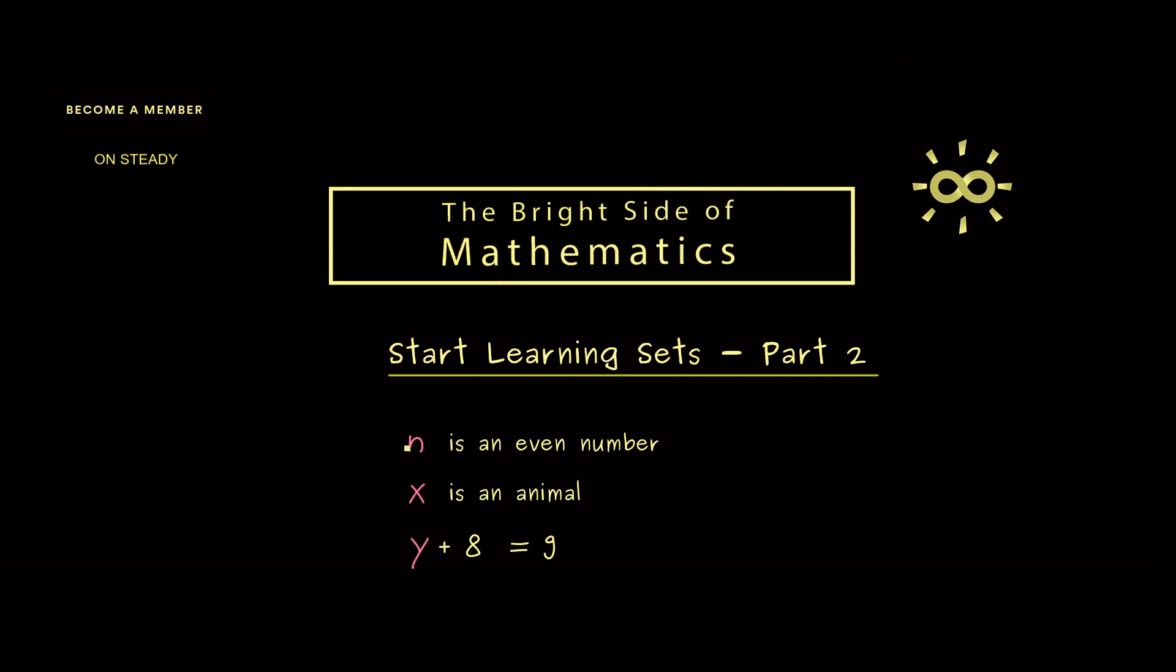Now what you should note here is that the letters n, x, and y are not any fixed numbers or fixed objects but just placeholders. Therefore maybe it would be better to write each sentence with such a gap which could be filled. Now when you put in a chosen object you get out a logical statement.